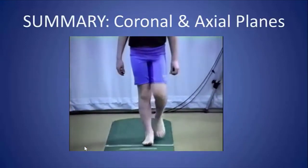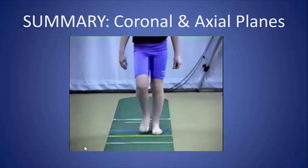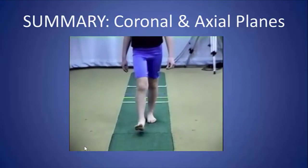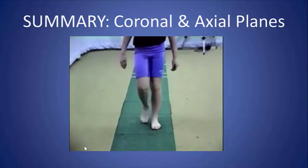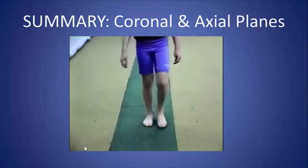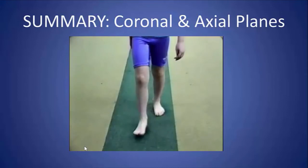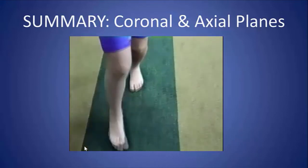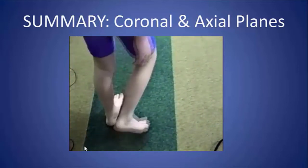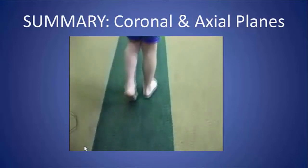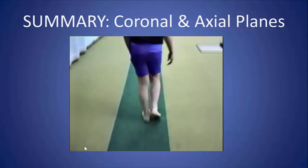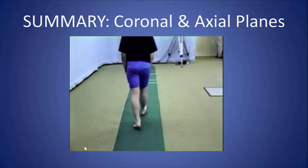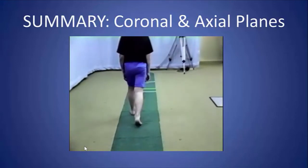In summary, for the coronal and axial planes, the goal is to keep things quiet and conserve energy. To help the swing phase limb move forward, the pelvis elevates in swing and also moves from a relatively posterior to a relatively anterior position to help create a longer step and keep moving the body forward on a level surface.